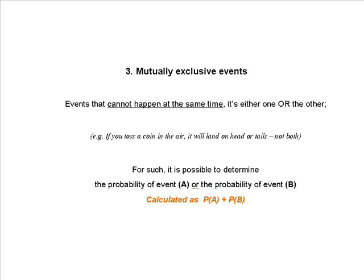Third, we have mutually exclusive events. These are events that cannot happen at the same time — it's either one or the other. For example, if you toss a coin in the air, it will land on head or tail, never both. For 2 mutually exclusive events, it will be possible to determine the probability of event A or the probability of event B, which is calculated by adding probability of A and probability of B.